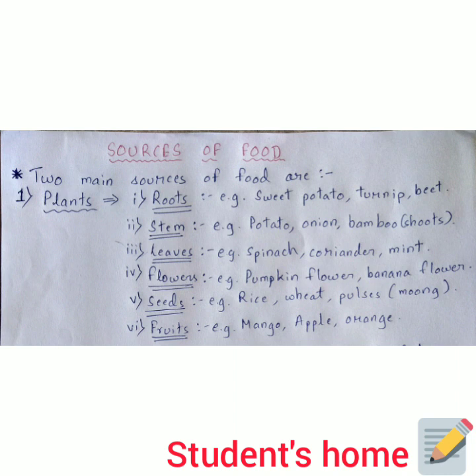The fifth point is seeds. Many seeds are eaten, and most are taken as staple foods. For example, rice is a staple food in most states of our country, wheat is also a staple — we take it as roti or chapati. All pulses also fall under seeds, for example moong dal, chana dal, and many other kinds of dals.